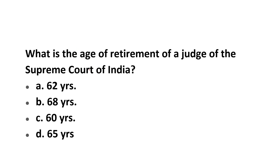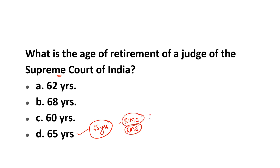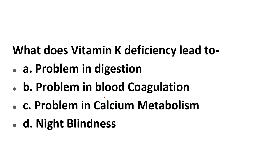What is the retirement age of a judge of the Supreme Court of India? The options are 62, 68, 60, and 65. The correct answer is 65 years. This question has appeared in RIMC and RMS exams, and can be asked in UPSAINIK 6th and 9th class papers as well — D is the correct answer.